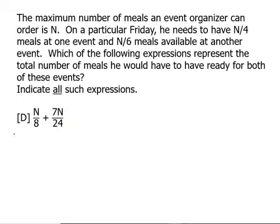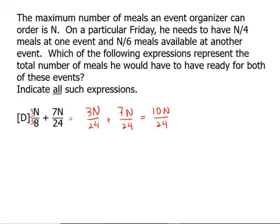Now let's look at D. The least common multiple of 8 and 24 is 24. We multiply by 3 over 3, giving us 3n over 24 plus 7n over 24. 3 plus 7 is 10, so we get 10n over 24. Canceling a factor of 2, we get 5n over 12. This one works — D is one of the answers.